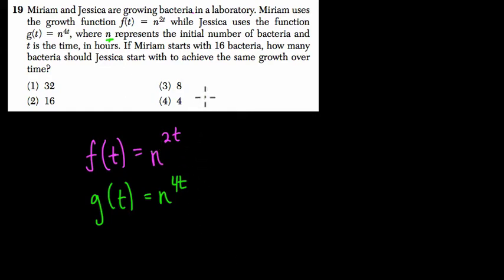So if Miriam starts with 16 bacteria, so now we know something, that in this case, Miriam is dealing with a very specific version of the function, where f(t) = 16^(2t), because 16, or n, is the starting point to the 2t power. So we know Miriam using this function.